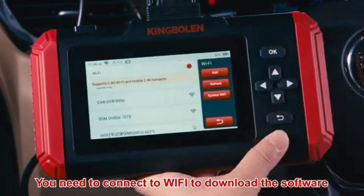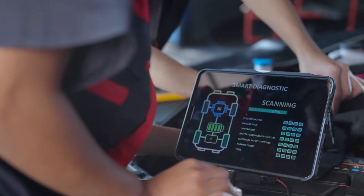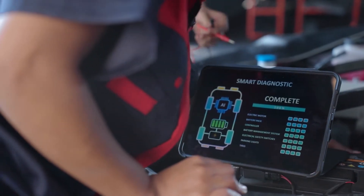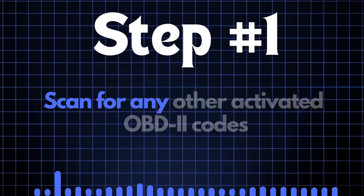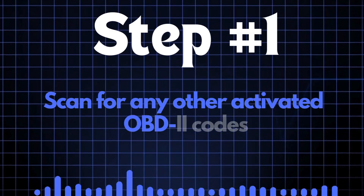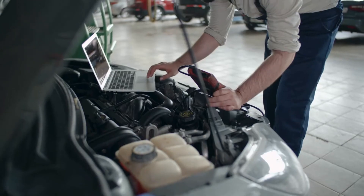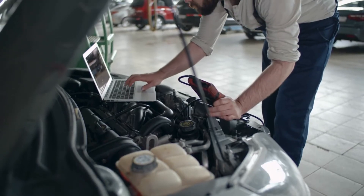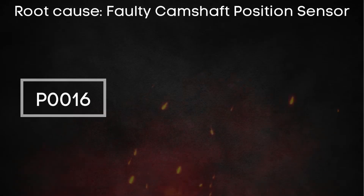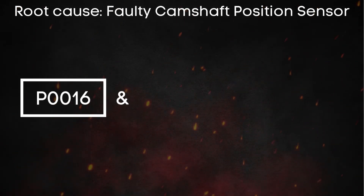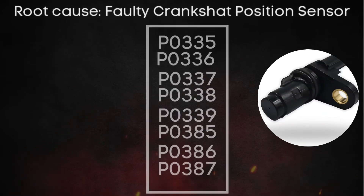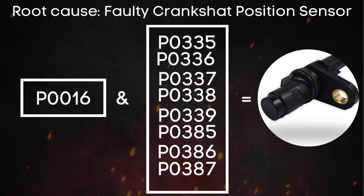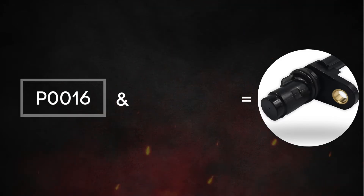If the code comes back, it means there's a persistent issue that needs further troubleshooting. The first step is to scan for any other activated OBD-2 codes — this helps us pinpoint where we need to focus. If there are other codes related to a faulty camshaft sensor, focus on the camshaft sensor. Similarly, if there are codes related to the crankshaft sensor, that's where our attention should go.